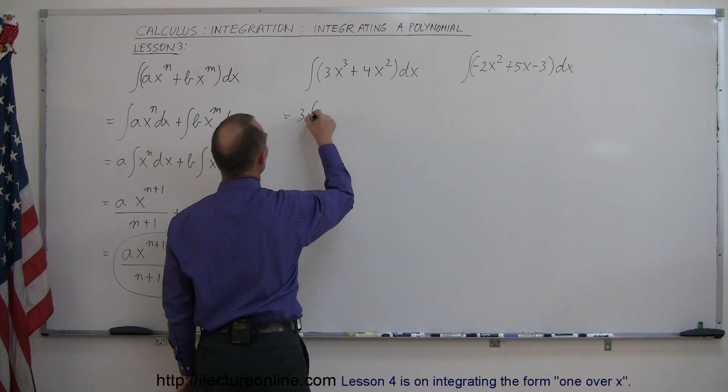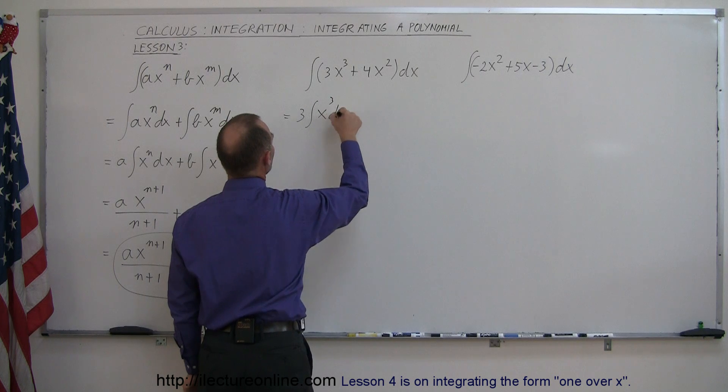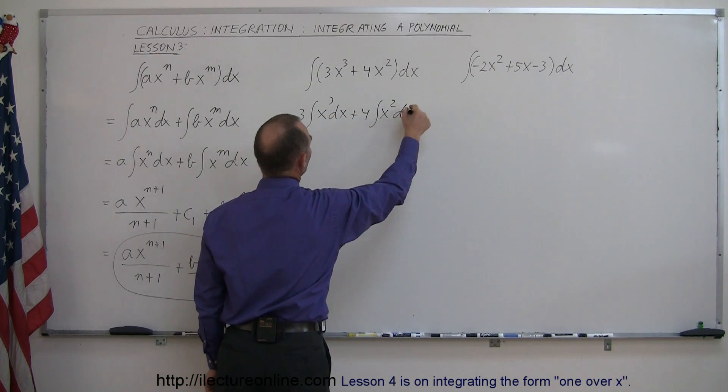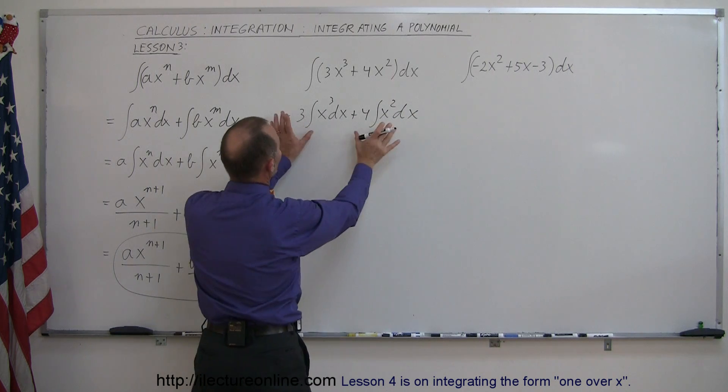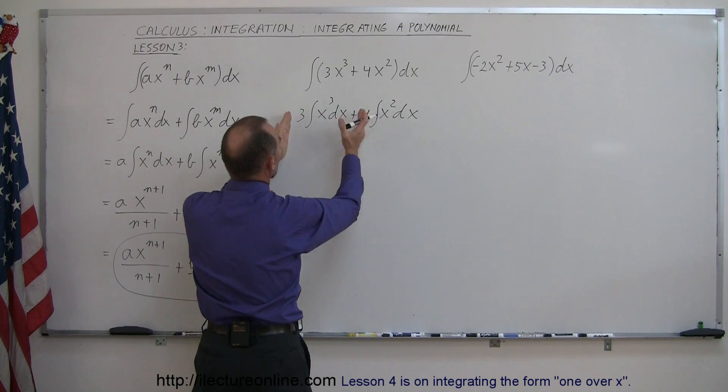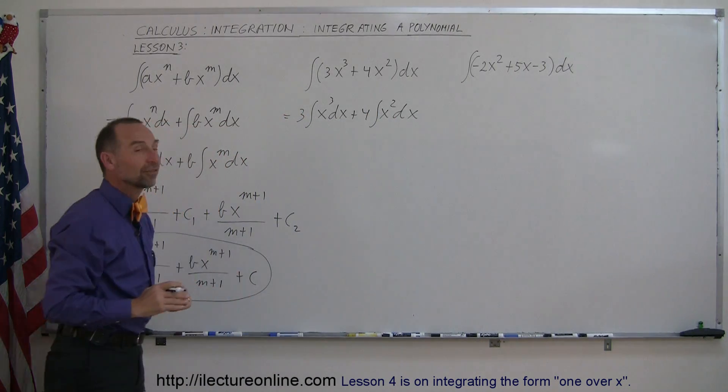This is 3 times the integral of x to the third power dx, plus 4 times the integral of x squared dx. We first separated the two terms in the polynomial as two separate integrals, and moved the constants outside the integral sign.